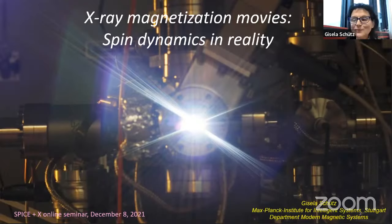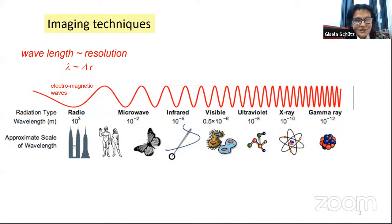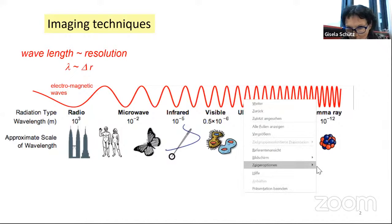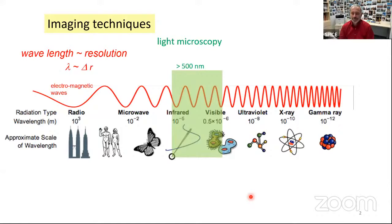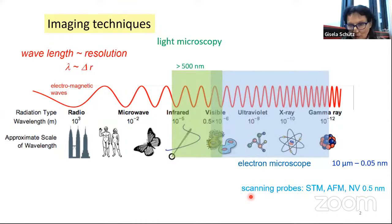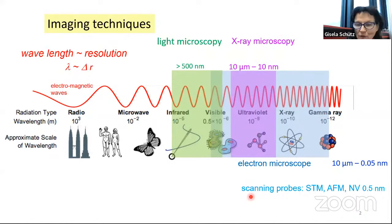Thanks for the invitation to give you some insights, old and new, in spin dynamics in reality, which we take with our X-ray microscope. So first, a short introduction into imaging techniques. It's normally so that the radiation you use determines the resolution by the wavelength. You will ask why we need it anymore, and I try to convince you in this talk that these X-rays can be useful for something.